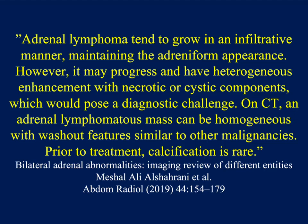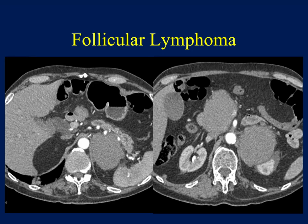What else can we think about? Adrenal lymphoma. We typically see adrenal involvement by lymphoma when there's multiple organ involvement — the liver, spleen, maybe the pancreas, adenopathy. On CT, an adrenal lymphoma mass can be homogeneous with washout features similar to other malignancies. Prior to treatment, calcification is rare. In this case there's a large adrenal mass but also a large pancreatic mass. Pancreatic cancer rarely goes to the adrenal in such a large solid lesion. This ended up being lymphoma. Lymphoma of the adrenal most commonly presents with bilateral involvement and multiple organ involvement.